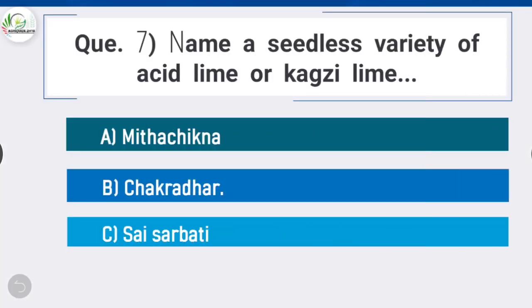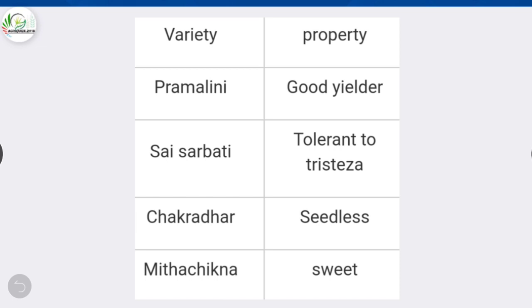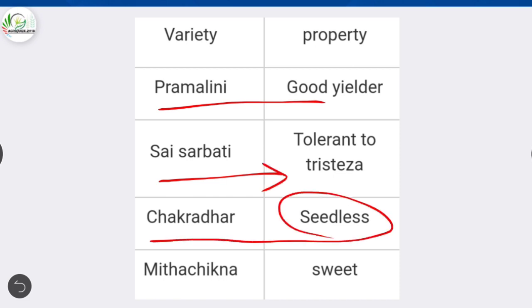Question 7: Name a seedless variety of acid lime or kagzi lime. Option B is correct: Chakradhar. Chakradhar is a seedless variety, and Meetha Chikna is a sweet variety of acid lime.